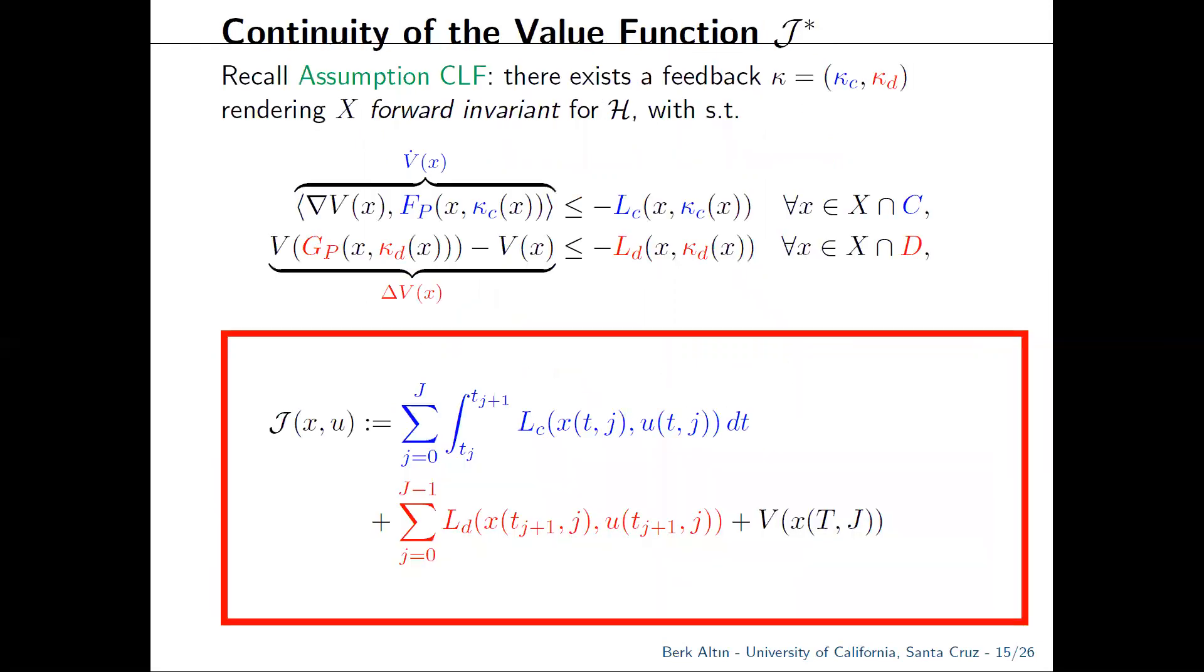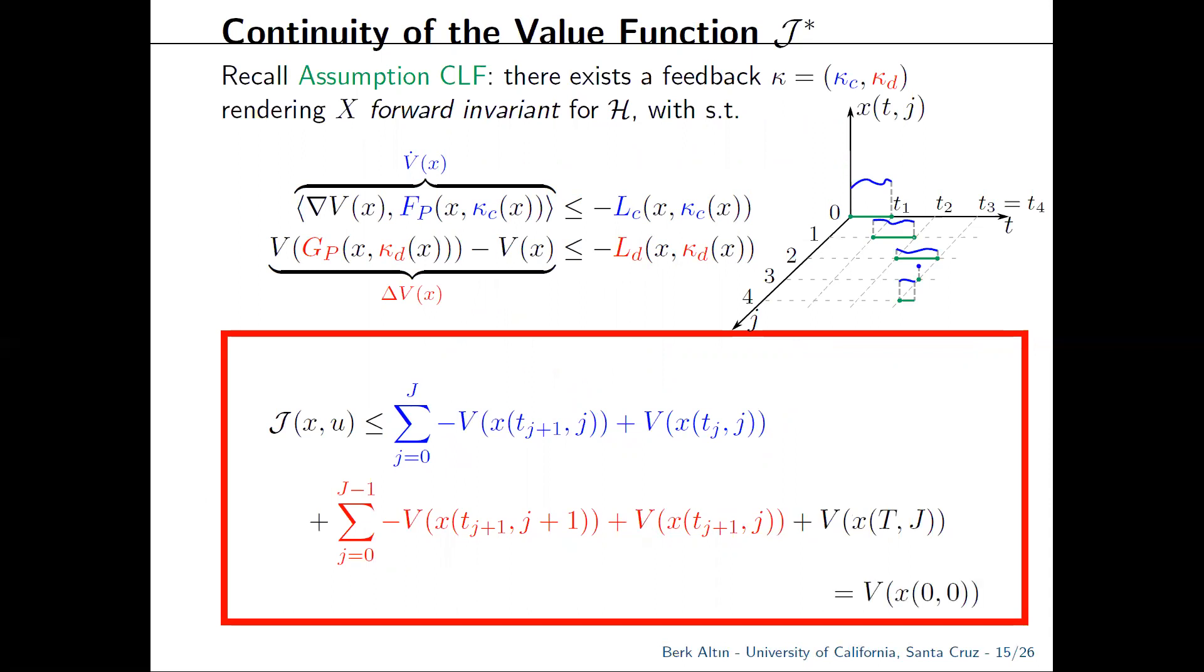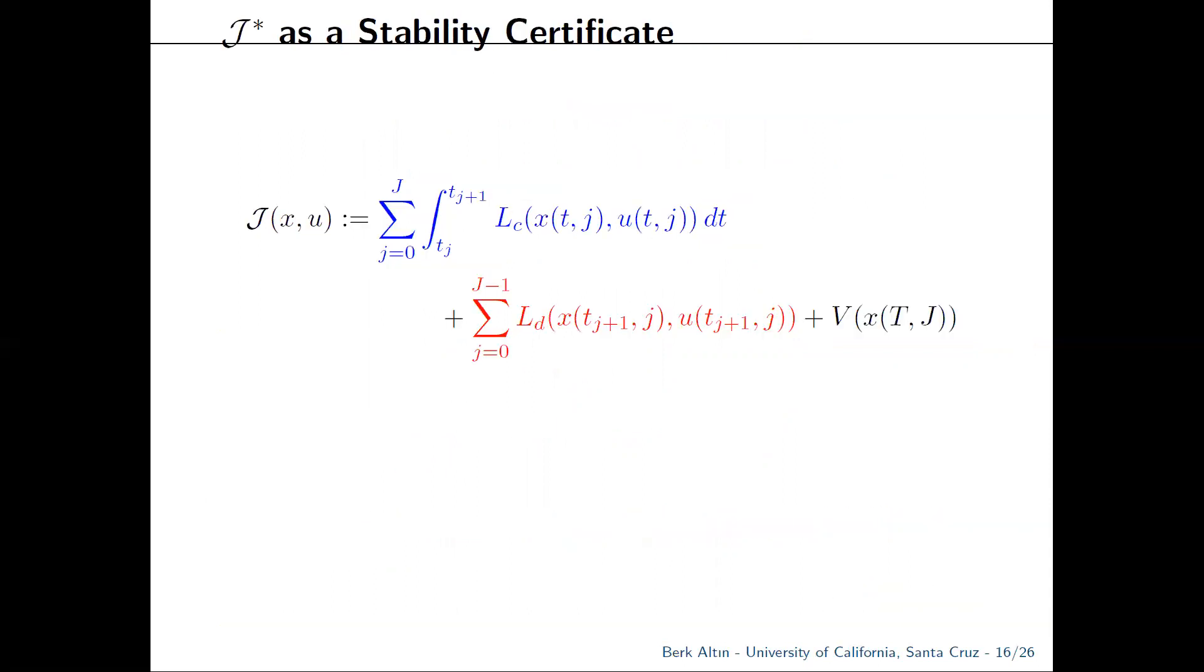In addition, using the CLF inequalities, you can show that the value function is upper bounded by the terminal cost. You simply take a sub-optimal solution pair generated by the local controllers, plug in the inequalities, and you're left with summation terms that essentially cancel each other out.